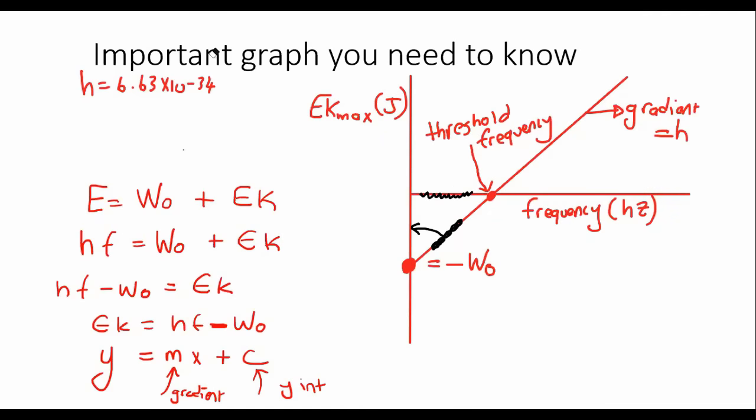But as soon as you get your frequency to be a little bit bigger, like over here, then all of a sudden, if you look at the y-value, it's now a positive number. So it means that the electrons are now being released from the metal. So it means that this point over here is the point, is the minimum frequency that you need in order to release the electron. And so that is the threshold frequency.